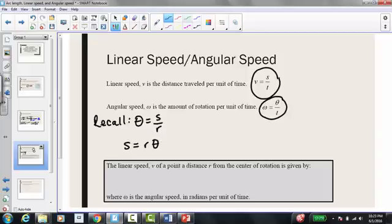I'm now going to take this equation and plug it in right here for our value of s, which is our arc length. So I get v, which is our linear speed, equals r times theta over t. And I can take it one step further and I can factor out that r and have r times theta over t.